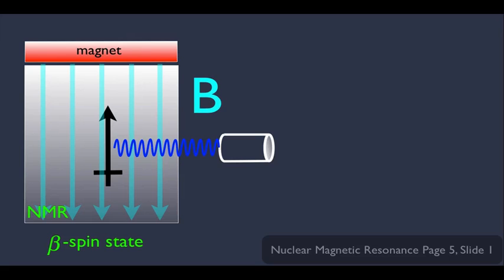Now what we want to look at here is the amount of energy it takes to do that. Remember different nuclei require different amounts of energy to bring them into this beta spin state. And there's a way to mathematically calculate that energy.